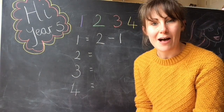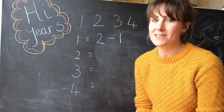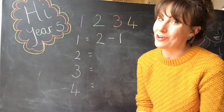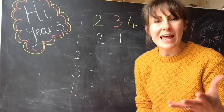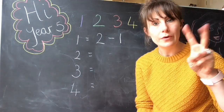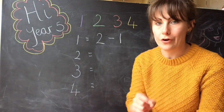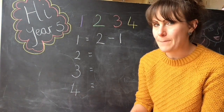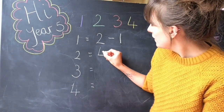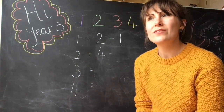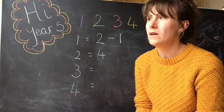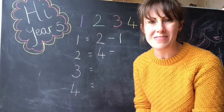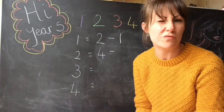I could challenge myself and make sure that all of my answers are calculations that include all four numbers. It is possible, you've just got to have a really good think about it. So let's try and make 2 but this time we're going to use all four numbers. I'm going to start with my biggest number and see how that goes — 4. Now I know that 2 is less than 4, and to get less than I'm going to want to use take away, so I'm going to put take away there.